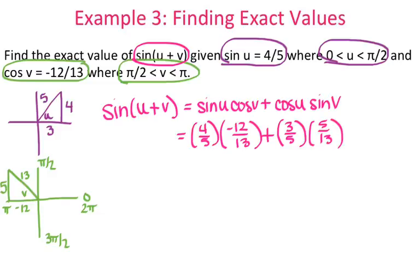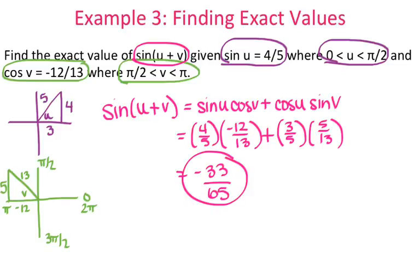Since there are no radicals, I'm going to take all of these fractions and plug them into my calculator. So I have 4/5 times negative 12 thirteenths, plus 3/5 times 5 thirteenths. Change it back to a fraction, and that gives you negative 33 over 65. Alright, so that concludes your notes for section 5.4, the sum and difference formulas.